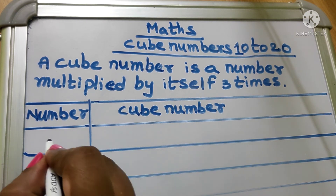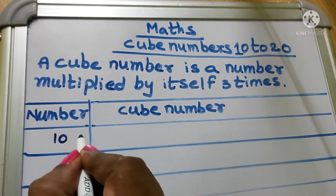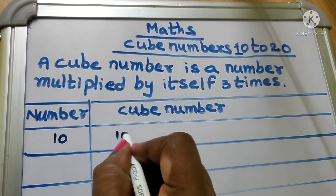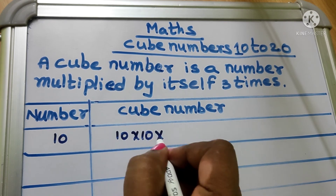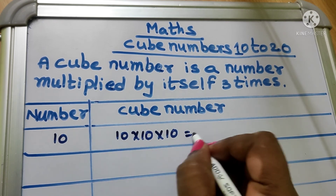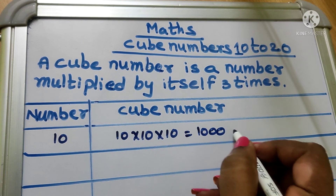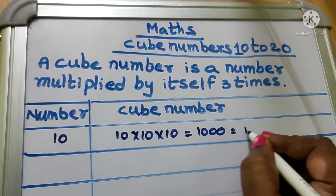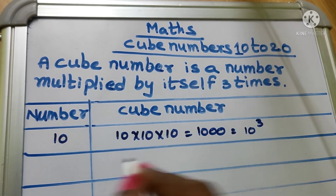Let's see number 10. 10 into 10 into 10 equal to 1000. We write as 10 cube.